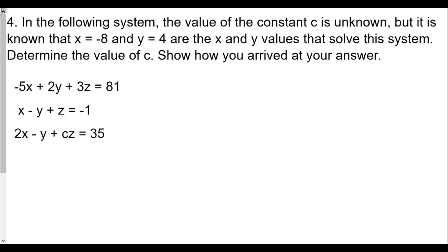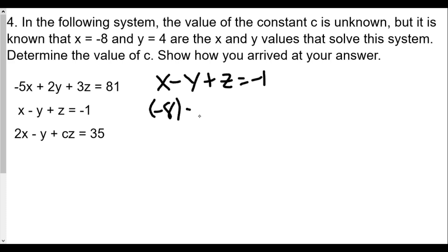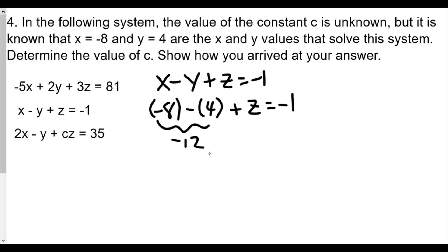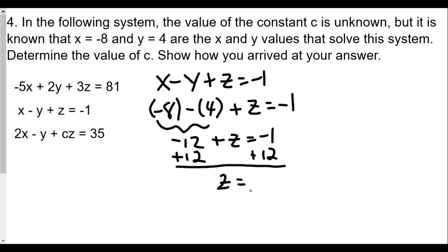Using the second equation — x minus y plus z equals negative 1 — and plugging in x equals negative 8 and y equals 4: negative 8 minus 4 plus z equals negative 1. That gives us negative 12 plus z equals negative 1. Adding 12 to both sides, we get z equals 11.